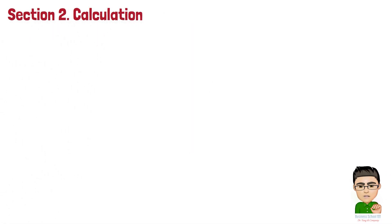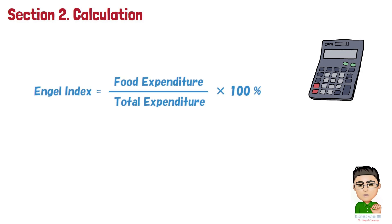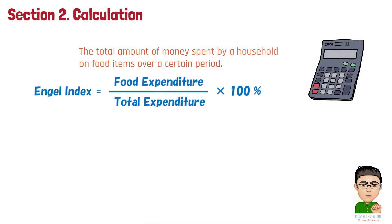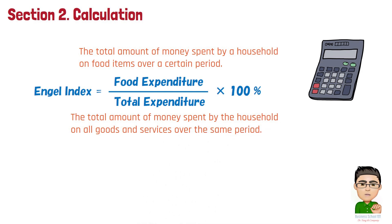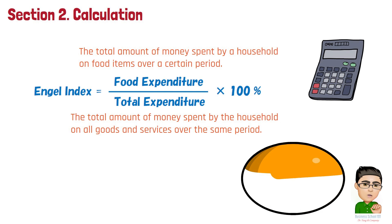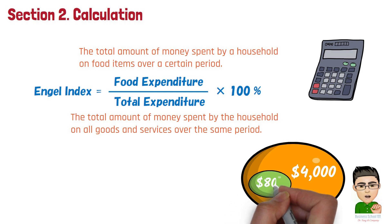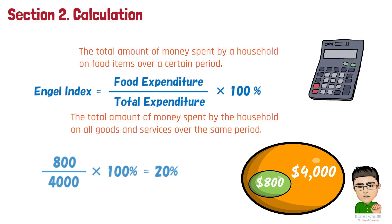Section 2: Calculation. The Engel Index is calculated using the following formula: Engel Index equals food expenditure divided by total expenditure, times 100%. Food expenditure is the total amount spent by a household on food items over a certain period, and total expenditure is the total amount spent on all goods and services over the same period. For example, if a household has a total monthly expenditure of $4,000 and a monthly food expenditure of $800, the Engel Coefficient is 800 divided by 4,000 times 100%, which equals 20%.